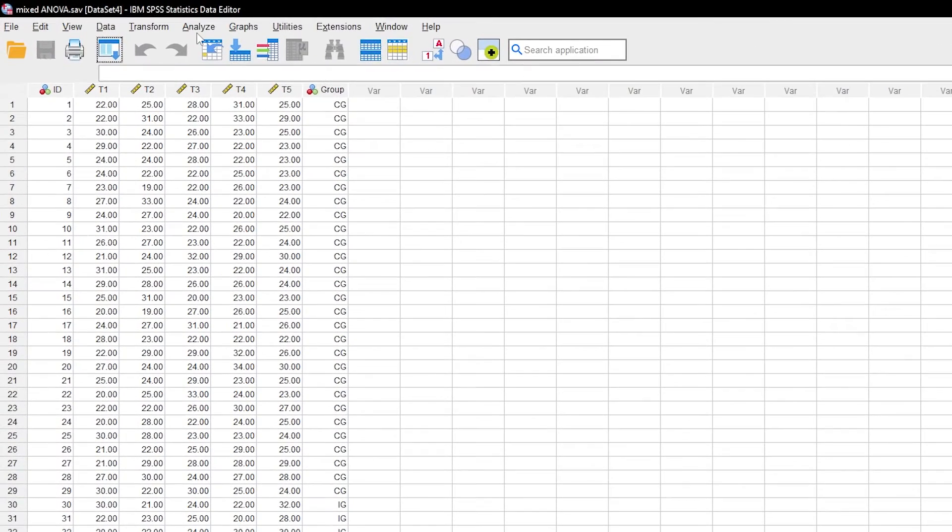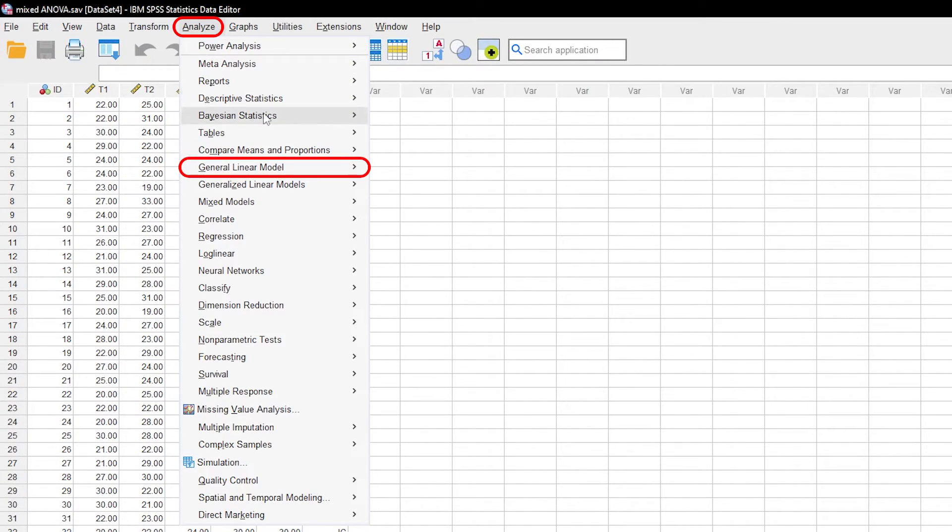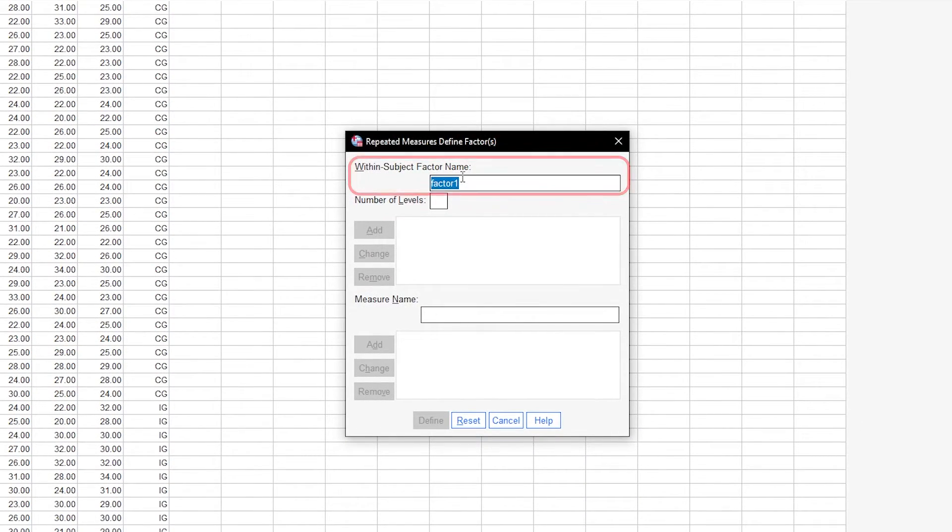Let's now calculate the mixed ANOVA. Go through Analyze, general linear model, repeated measures. Enter the name for the within-subjects effect at the top. If you have repeated measurements, you can simply enter time here. If you have measured different stimuli, you can enter stimulus here.